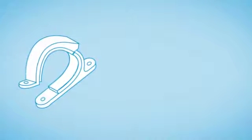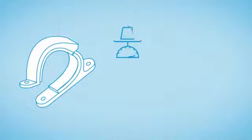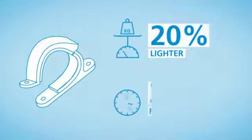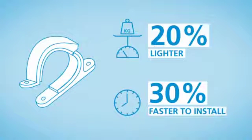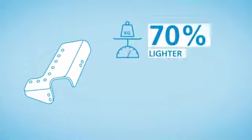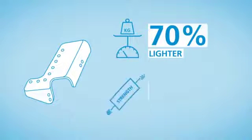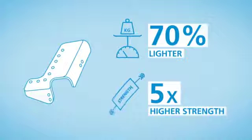Molded brackets made from Victrex Peak have been found to be up to 20% lighter and up to 30% faster to install than metal. Victrex Peak-based composite brackets offer up to 70% weight saving and up to 5 times higher specific strength than metal.